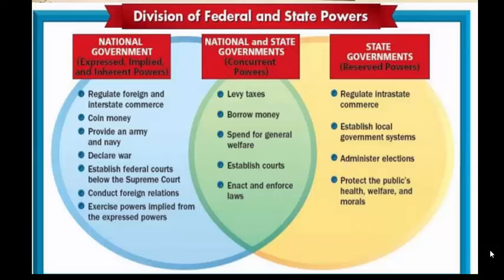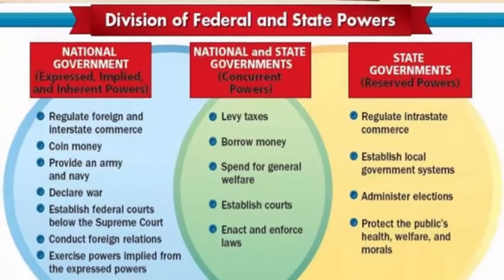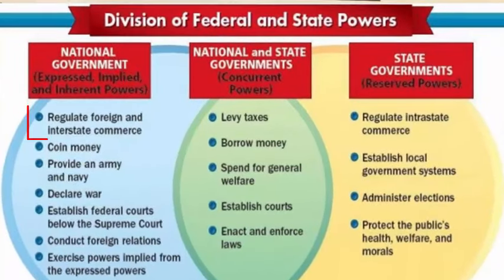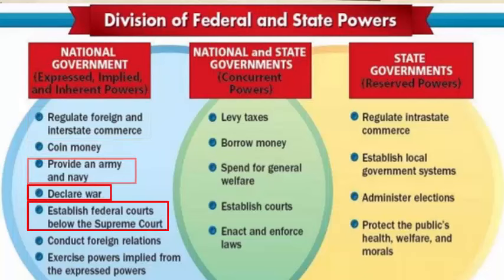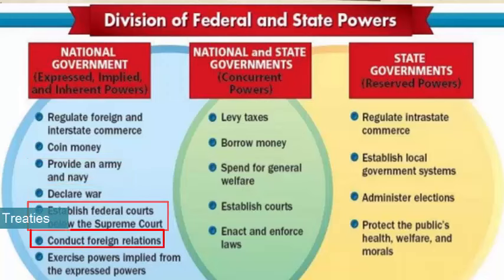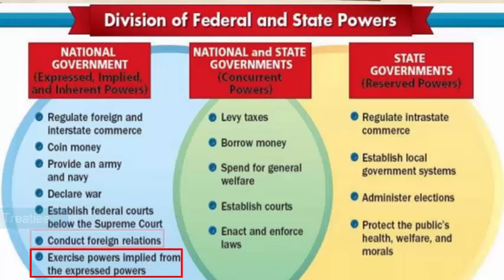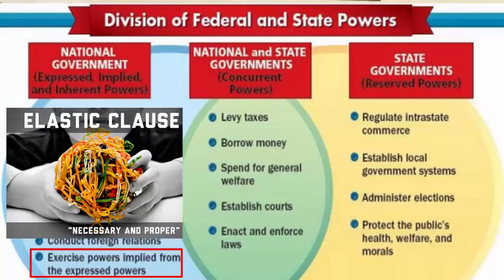Here are the powers you need to know for your exam. For national powers: regulate foreign and interstate commerce, coin money, provide an army and navy, declare war, establish federal courts below the U.S. Supreme Court, and establish treaties. And finally, implied powers, which come from the Necessary and Proper Clause — also known as the Elastic Clause — which lets the national government stretch their powers. We'll come back to this later in the video.